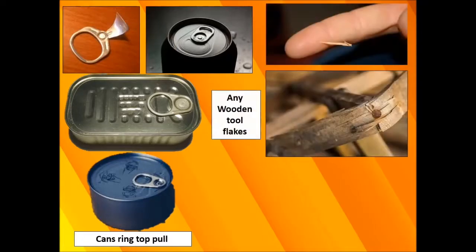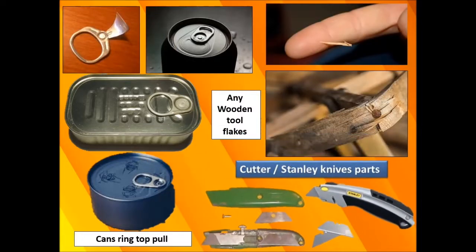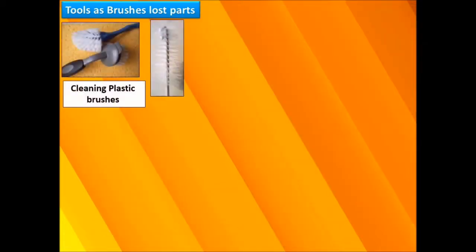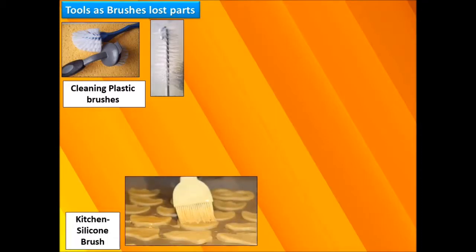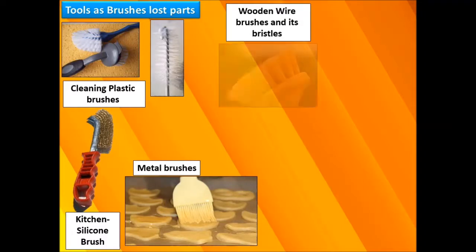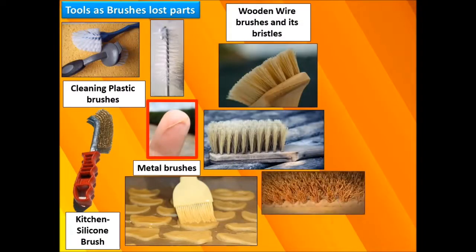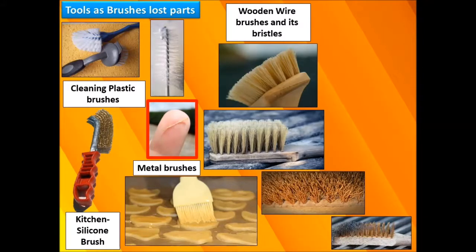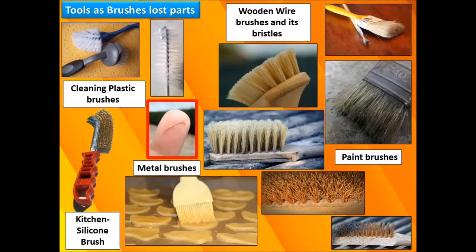Other tool hazards include cans with ring-top pulls, wooden tool flakes, Stanley knives, and brushes with lost parts — whether plastic kitchen brushes, silicone brushes, metal brushes, or wooden wire brushes. Bristles from these brushes are very tiny and may be difficult to diagnose or find in the food industry or catering. Paint brush lost parts are also a hazard.